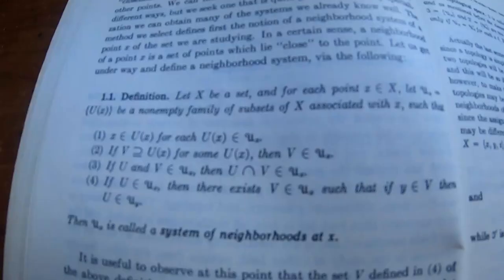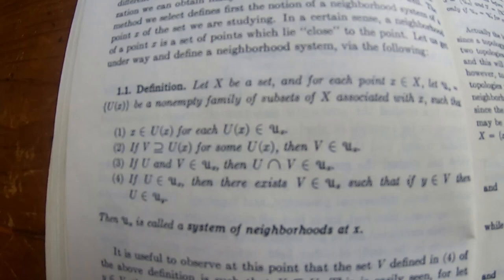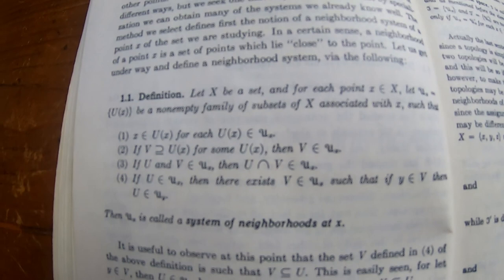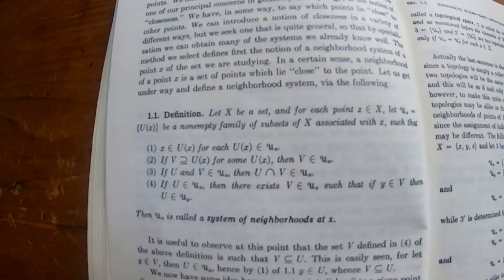There it is, there is the definition that plagued my life for a couple days at least. When I took topology, which was my last semester as an undergrad, I could not understand this definition. Maybe it was all of the subscripts or just the notation. I just couldn't get it. Now when I read it, I'm like, 'Okay yeah, okay, that makes sense.' But at the time it was so much harder, just a really difficult sticking point for me when I was studying topology.